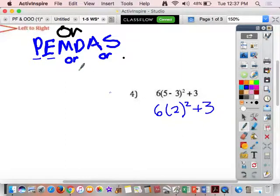Alright, now, do I have any more parentheses? No, I have a multiplication, but it's not really a parentheses. Do I have any exponents? Yes, 2 squared. So, I'm going to do that. 6. 2 squared is 2 times 2. 2's times each other. So, that is 4 plus 3.